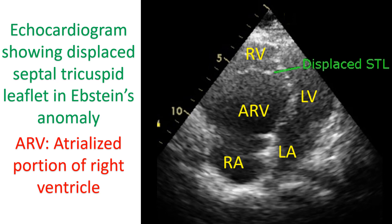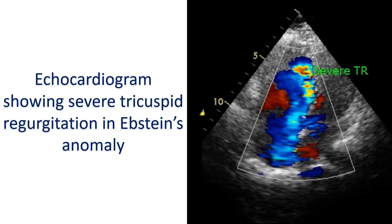This echocardiogram in Epstein's anomaly shows the gross distal displacement of the septal tricuspid leaflet and the atrialized portion of the right ventricle. This color Doppler echocardiogram shows severe tricuspid regurgitation as a bluish mosaic jet from the right ventricle to the right atrium.